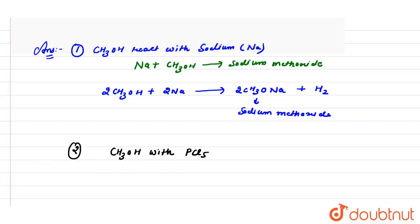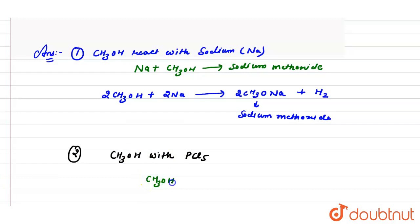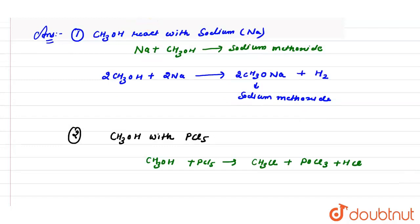When methanol reacts with PCl₅, we get methyl chloride (CH₃Cl), POCl₃, and HCl. So methyl chloride is the main product obtained from this reaction.